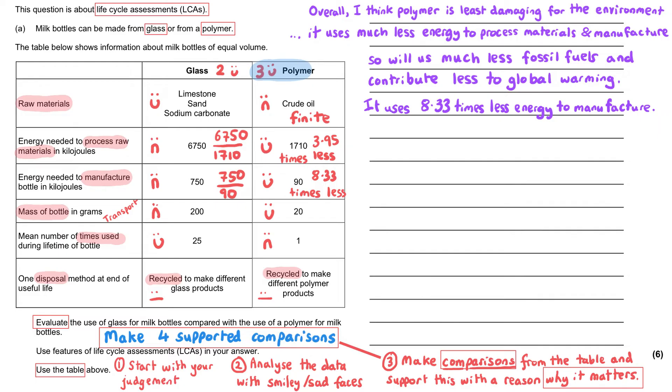If we take a look at the mass of the bottle, we can say that the polymer is much lighter. Don't just quote the masses, say it's much lighter. And in fact, we can show off and say it is 10 times lighter. And if it's 10 times lighter, then that might mean it takes 10 times less energy to transport, which again is going to conserve our energy resources for everything that we've already said.